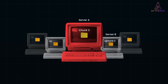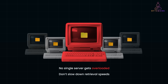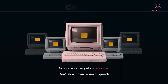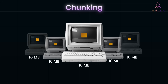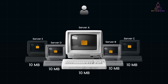Now that we have multiple servers, we need a smart way to distribute files so that no single server gets overloaded and large files don't slow down retrieval. This is where chunking and load balancing come in. Instead of storing a 100 MB video file on a single server, we split it into smaller 10 MB chunks: chunk 1 on server A, chunk 2 on server B, chunk 3 on server C, and so on. When a user downloads the file, they retrieve chunks in parallel, making it much faster. If one server fails, we only need to fetch the missing chunk rather than losing the entire file.